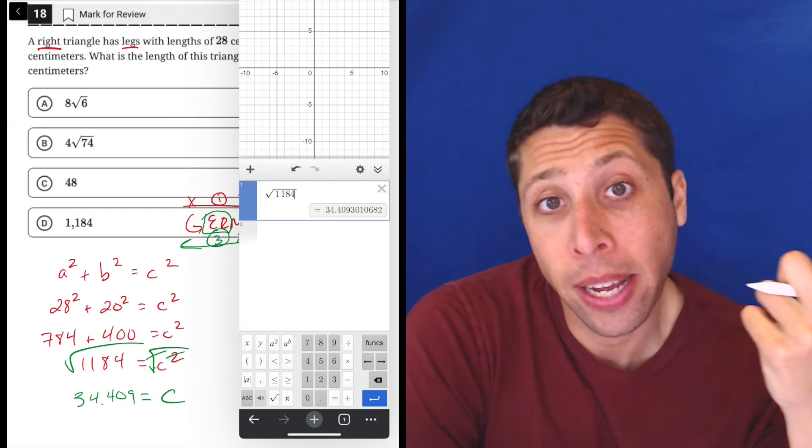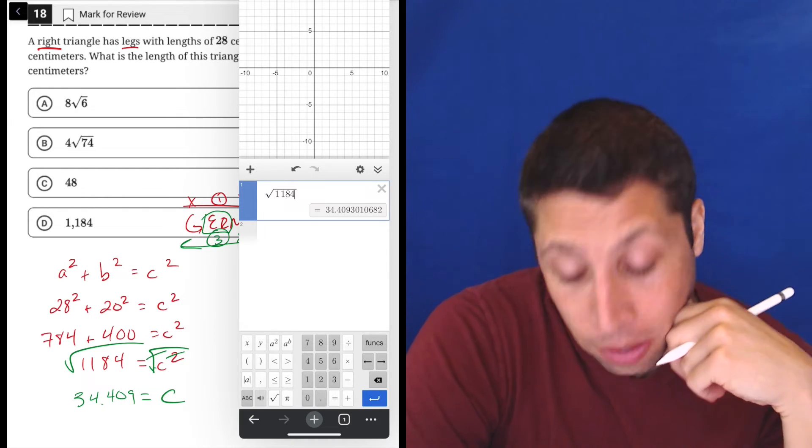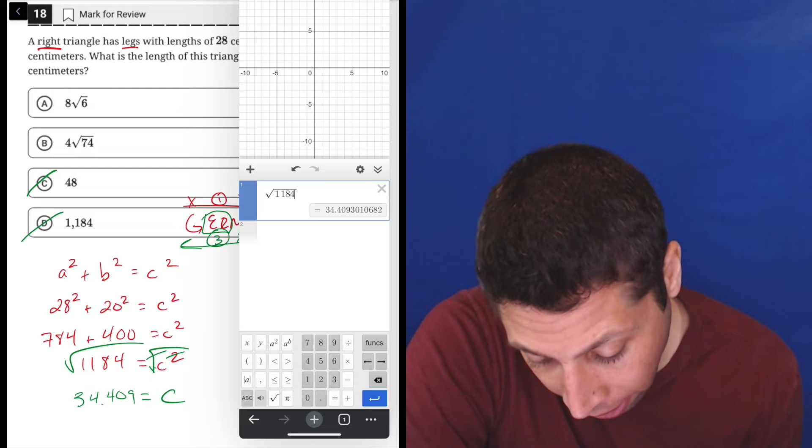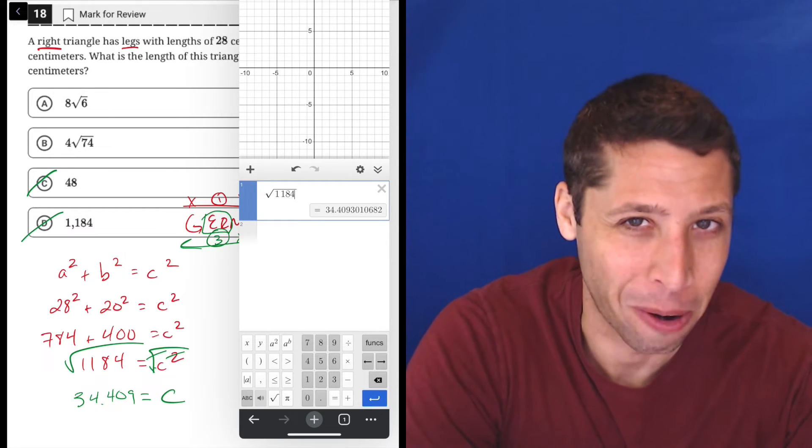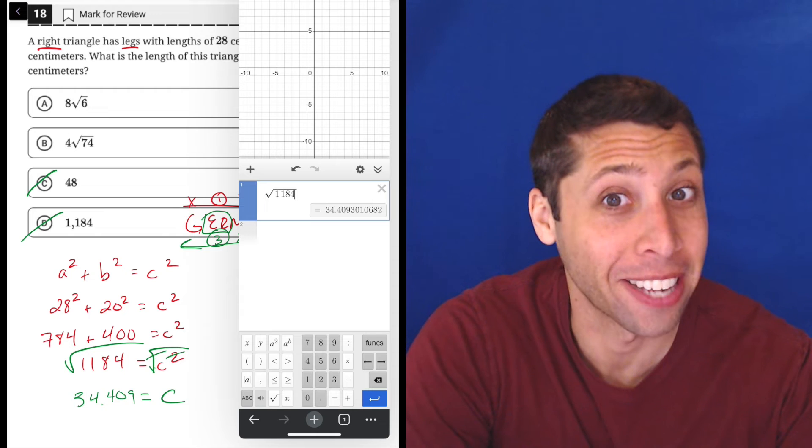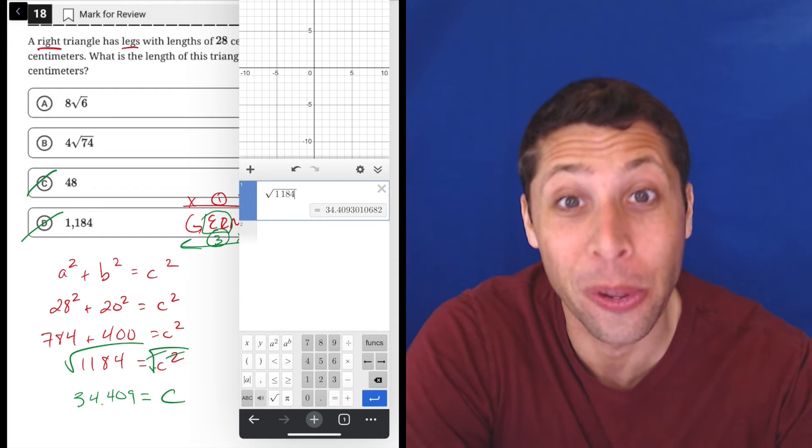Now what am I going to do? Because I don't have that kind of answer in my answer choices. I know it's not 48. I know it's not 1184, but notice where that choice came from. They hoped we forgot that last algebra step, and I know students who do that all the time.